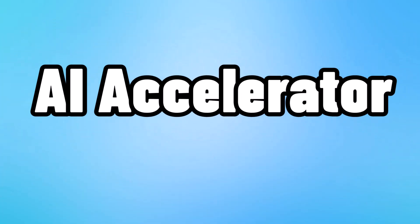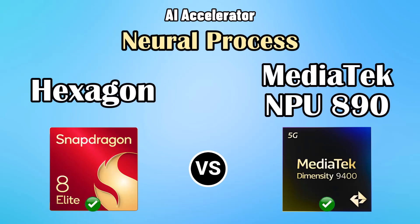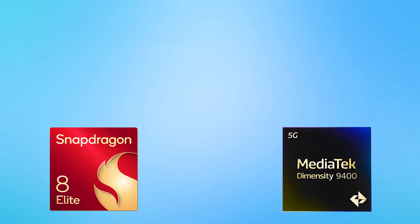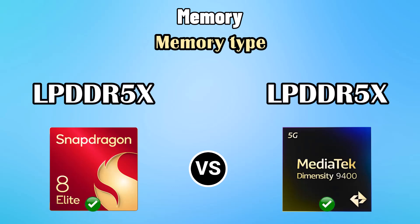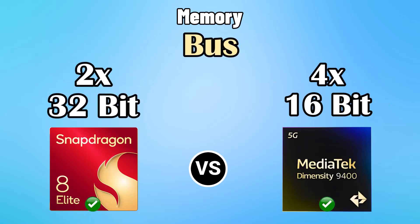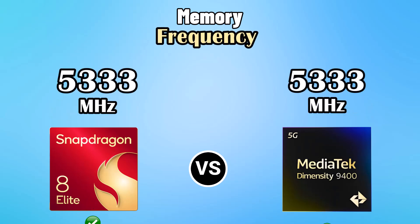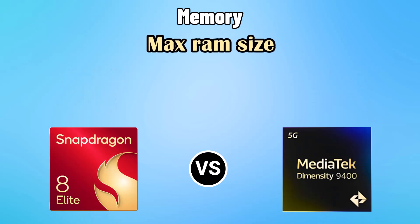A.I. Accelerator: Neural Process A.I. Accelerator. Memory: Memory Type, BUS, Frequency, Maximum Bandwidth, Maximum RAM Size.